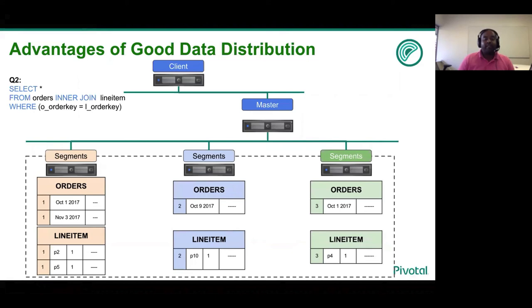In other words, the join can happen in parallel within each segment without seeing tuples of the other table on the other segment. This ideal distribution policy maximizes parallelism and makes your query run on your petabyte of data super fast.